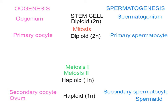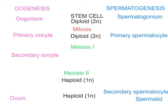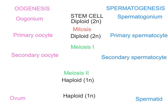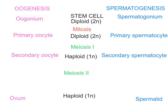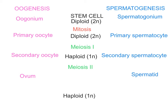These cells then undergo meiosis, and we know that there are two stages of meiosis. Meiosis I, where the homologous chromosomes separate, and meiosis II, where the sister chromatids separate. After meiosis I, you are going to have the secondary oocyte and in males the secondary spermatocyte. Both of these cells are now going to be haploid. Meiosis II then continues, and you end up with the ovum and the spermatid — again, haploid.